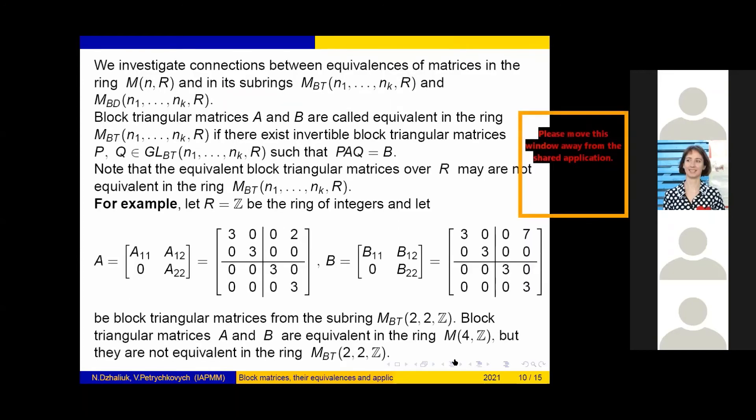We investigate connections between equivalences of matrices in the ring M_n(R) and its subrings M_BT and M_BD. Block triangular matrices A and B are called equivalent in the ring M_BT if there exist invertible block triangular matrices P and Q such that PAQ = B.